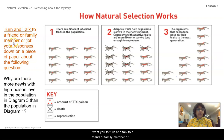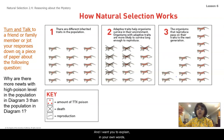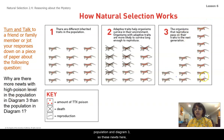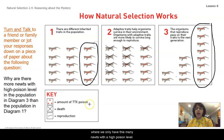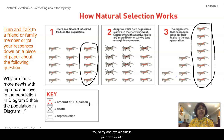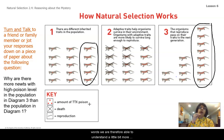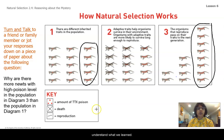I want you to turn and talk to a friend or family member — jot your responses down on a piece of paper. Explain in your own words: why are there more newts with high poison level in the population in diagram three compared to diagram one, where we only had a small number of newts with a high poison level? Pause the video and try to explain this in your own words. When we explain something in our own words, we are able to understand a little bit more about what's happening.